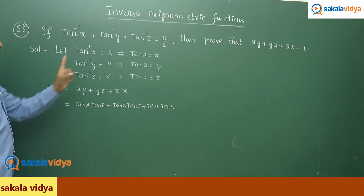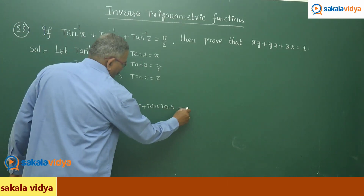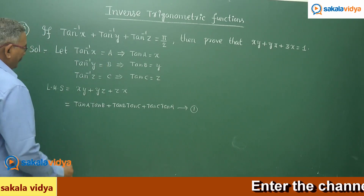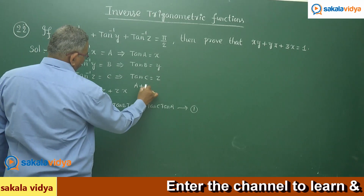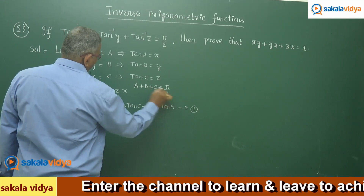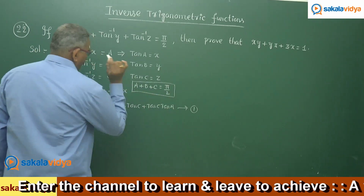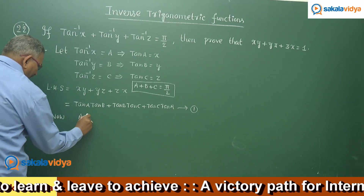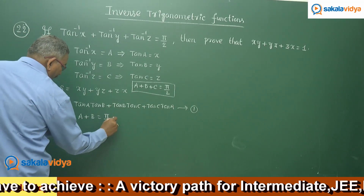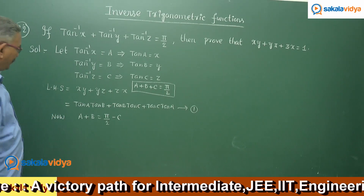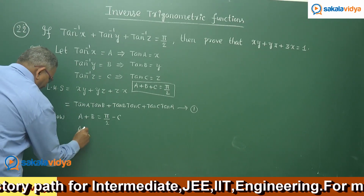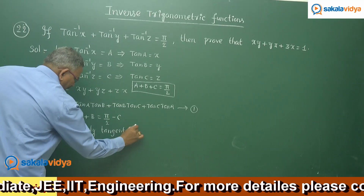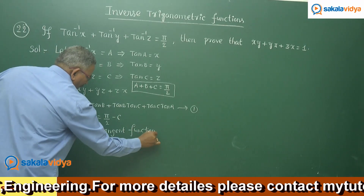We need to prove this equals 1 — call this equation 1. Here, observe that a plus b plus c equals pi by 2. This is very important. Now we can write a plus b equals 90 minus c. Applying the tan function on both sides.